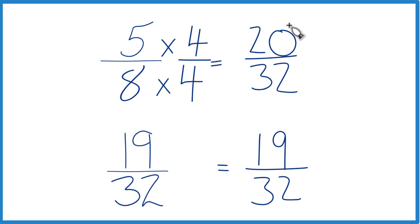20, that is larger than 19. So 20 32nds, that's larger than 19 32nds. Only by 1 32nd, but it's still greater.